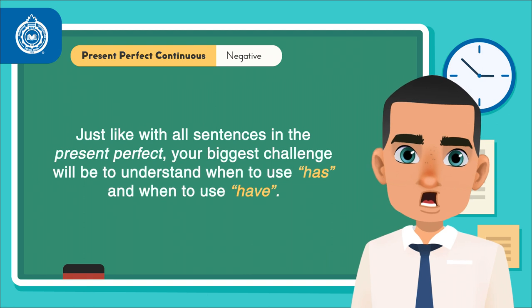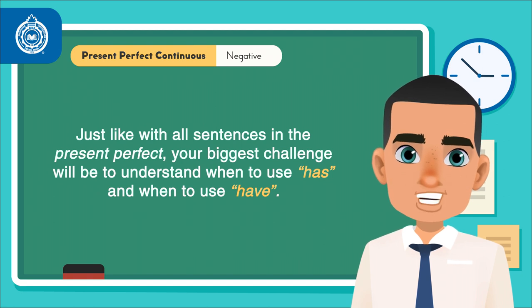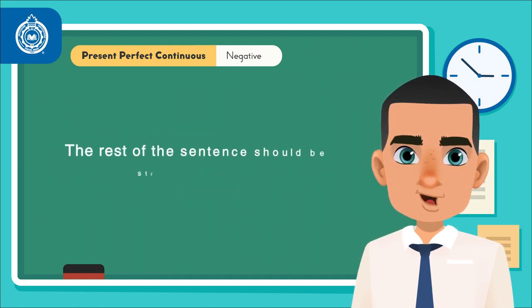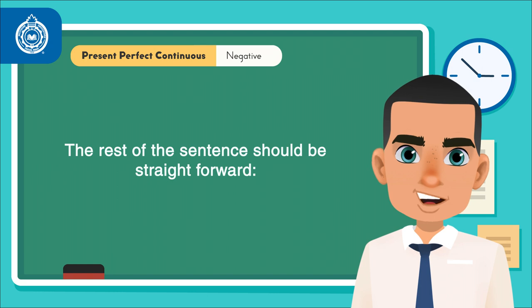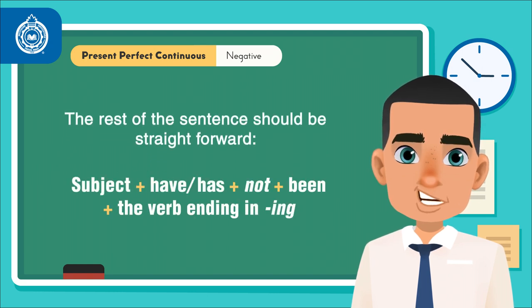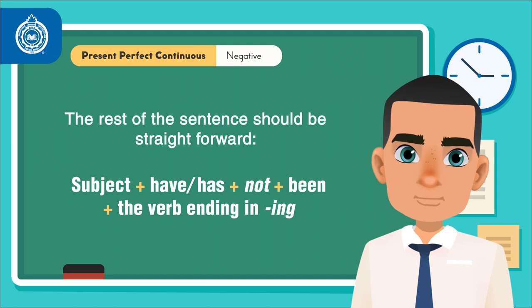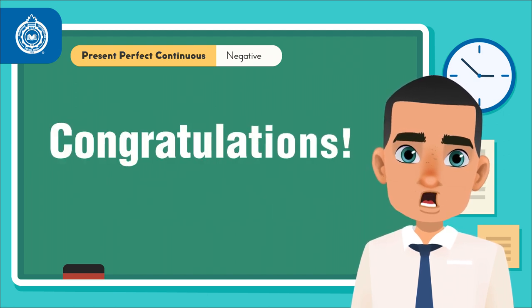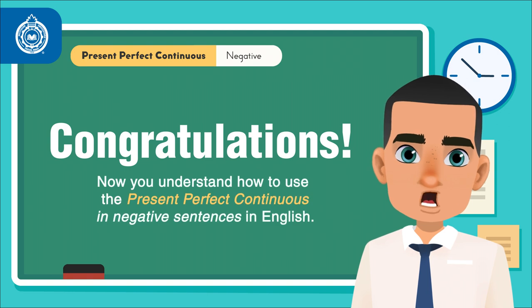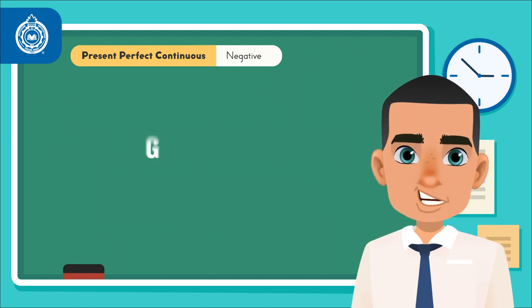Just like with all sentences in the present perfect, your biggest challenge will be to understand when to use has and when to use have. The rest of the sentence should be straightforward: subject plus have/has plus not plus been plus the verb ending in -ing. Congratulations! Now you understand how to use the present perfect continuous in negative sentences in English. Good luck!